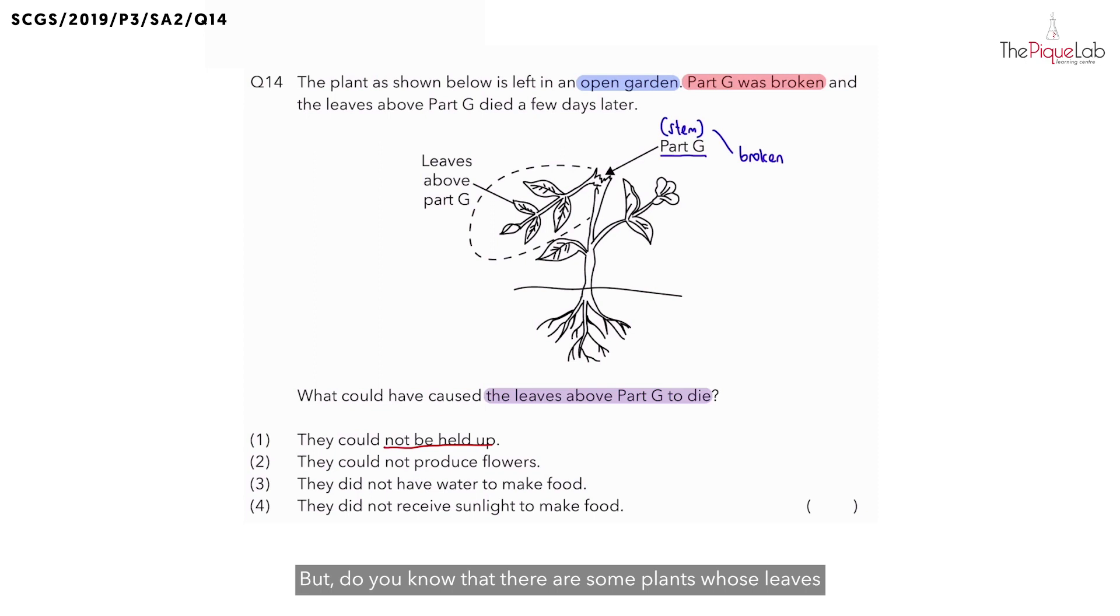But do you know that there are some plants whose leaves are not held up and they are actually on the ground? But despite that, they can still survive. What are some examples of plants that are on the ground and can still survive? One very good example is the watermelon plant. Besides the watermelon, we also have plants like the pumpkin. So even though the leaves of these plants are on the ground, they can still survive.